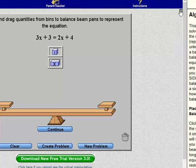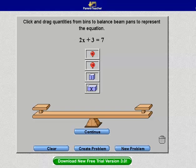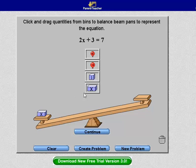And I've set up an example here already. In this example, we have 2x plus 3 equals 7. The directions say click and drag quantities from bins to balance the beam pans to represent the equation. So on the left side, I need to have 2 x's.